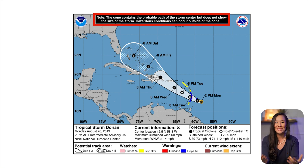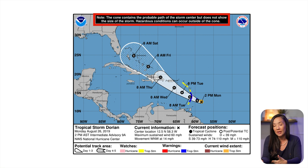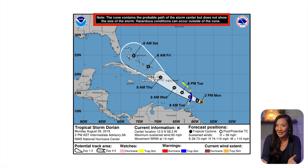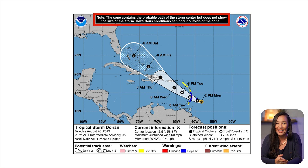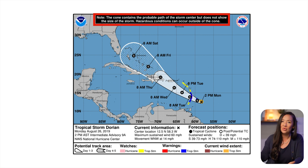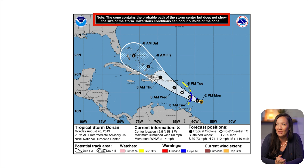If you're making a visualization that depends on readers reading captions to understand it correctly, you might be making a mistake. There will always be some readers who do not read your caption. Rather than leaning heavily on captions, consider modifying the visualization so it doesn't rely on them. Alternative hurricane forecast visualizations exist that don't create this misconception of storm size growing over time — and that's the type of design we recommend.